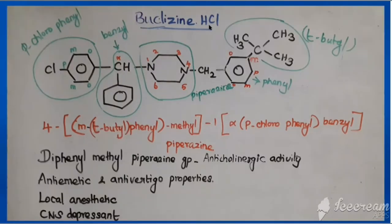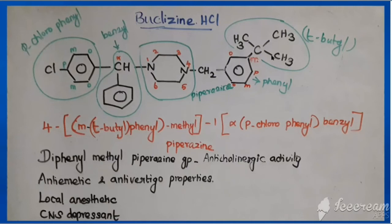The next drug is buclizine hydrochloride, also available as a hydrochloride salt. Buclizine is closely related to meclizine. In meclizine, there is a methyl group at the meta position of the phenyl ring — that methyl has three hydrogens. In buclizine, all three hydrogens of that methyl are replaced by methyl groups, making it a tertiary butyl group. So 'ME' in meclizine indicates methyl; 'BU' in buclizine indicates tertiary butyl. The only difference is meclizine has methyl at the meta position while buclizine has tertiary butyl at the meta position.